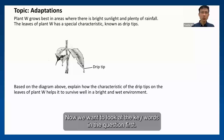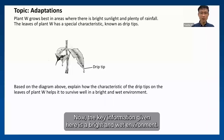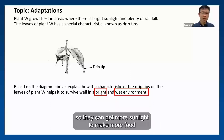We want to look at the keywords in the question first. The key information given here is a bright and wet environment. Why do plants want it to be bright? So they can get more sunlight to make more food.